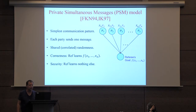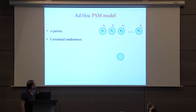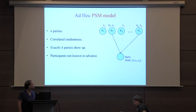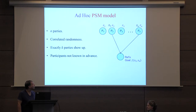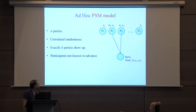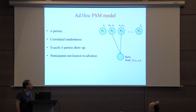This is the PSM model. Now let's speak about Ad Hoc PSM. We have n parties with correlated randomness, but exactly k parties will show up. In this example, k equals 2, and p2 and pn will show up. The goal of the referee is to compute f of x2 and xn. The participants are not known in advance — for instance, p2 and p3 could show up instead. This shouldn't change the message of p2, and p3 will not know that p2 is the other party. Each party is not aware of the other parties participating.